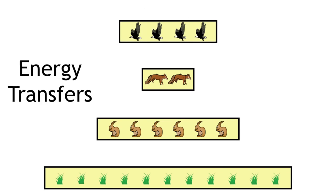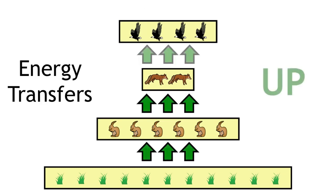In the ecosystem, the energy is being transferred up the pyramid, as each organism is consumed by the organism in the next trophic level up.